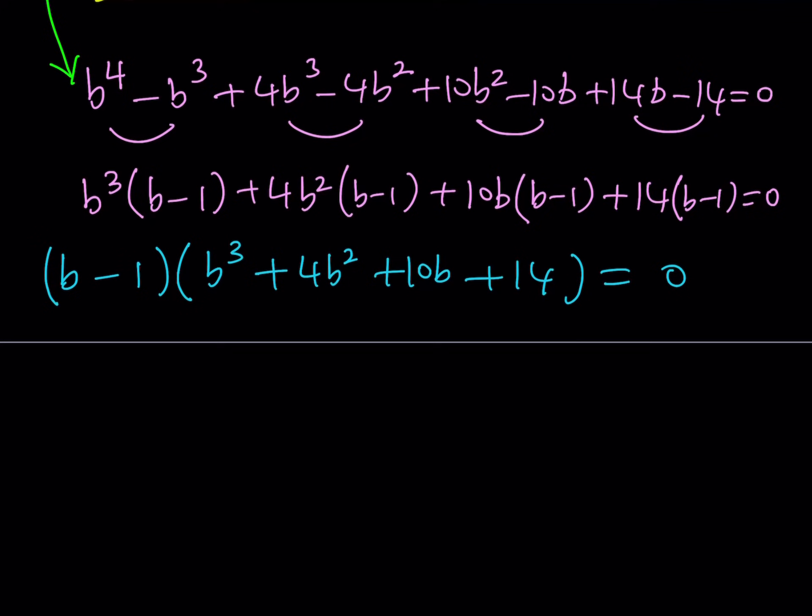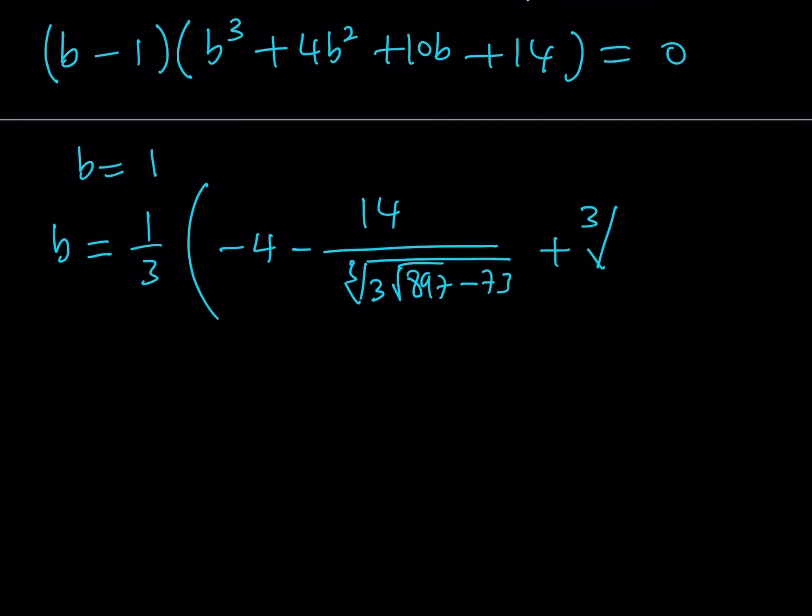Isn't that a beautiful tool? If you just enter this equation into Wolfram Alpha, maybe I'm going to include the link in the description so that you can check it out yourself, too. But, anyways, this equation gives us B equals 1, obviously, and another solution, which can be written as follows. B equals 1 over 3 times the quantity negative 4 minus 14 over the cube root of 3 times the square root of 897 minus 73. Such a nice number, right? Plus, the cube root of 3 times the square root of 897 minus 73. And, this is the other solution.